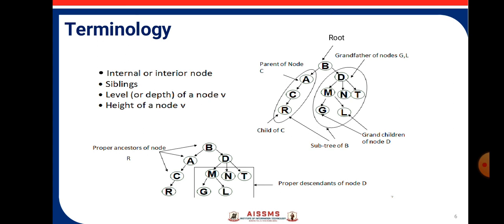D is the parent node of M, N, T. Here, M, N, T are the siblings. Root is the B. R, G, L are the leaf node or the external node. Interior nodes: A, C, M, N, T are the internal nodes. When we see the next tree, here the proper ancestor of the node R are C, A, B. And the proper descendants of the node D are M, N, T, G, L.